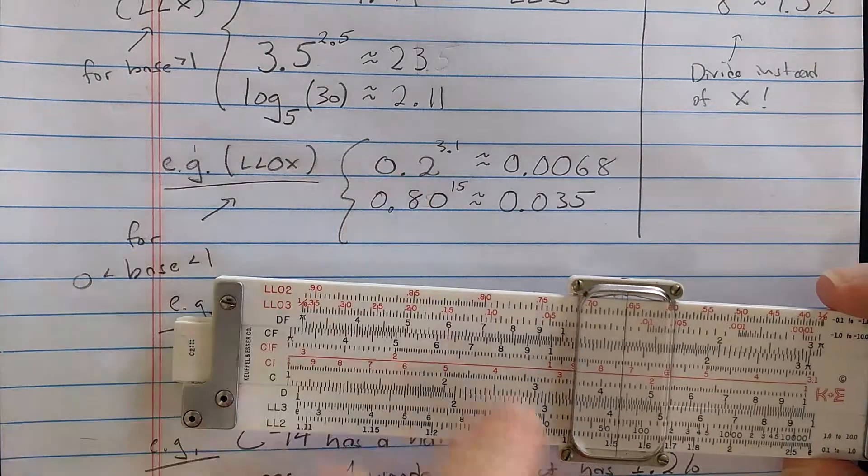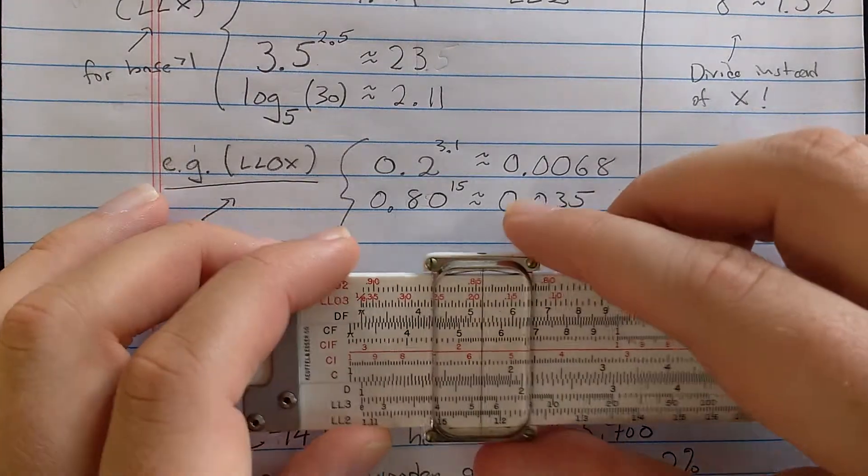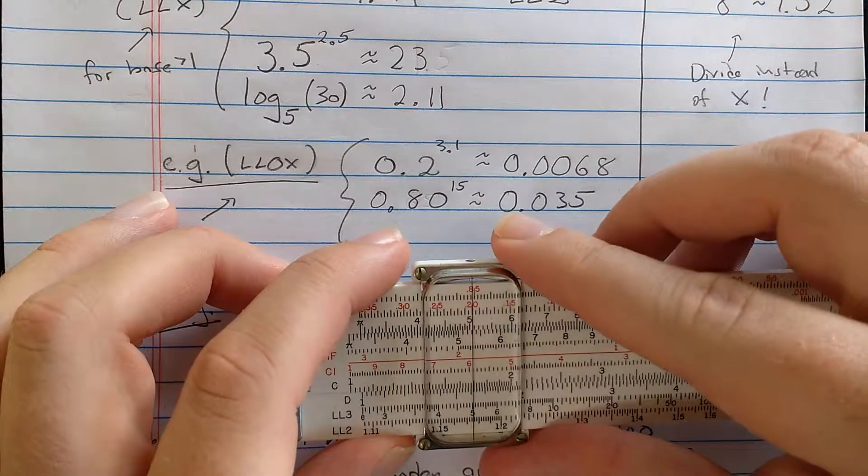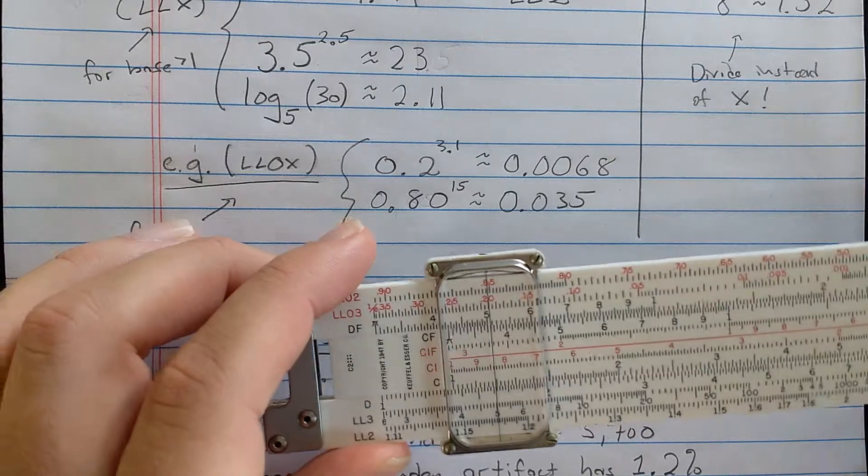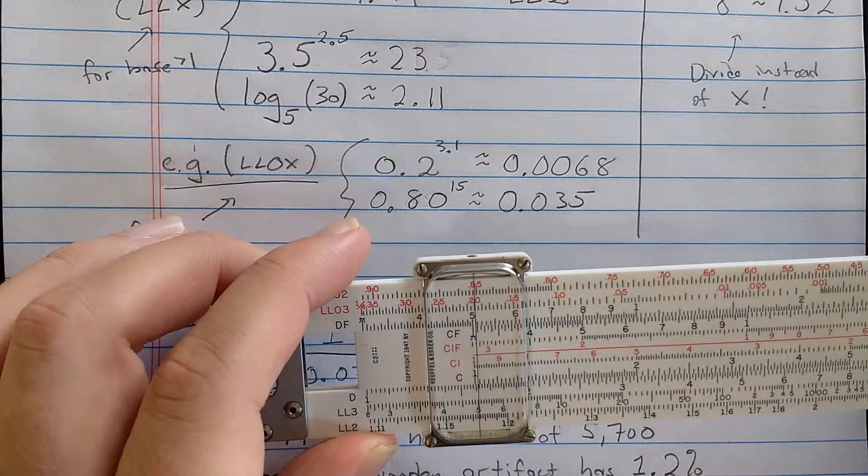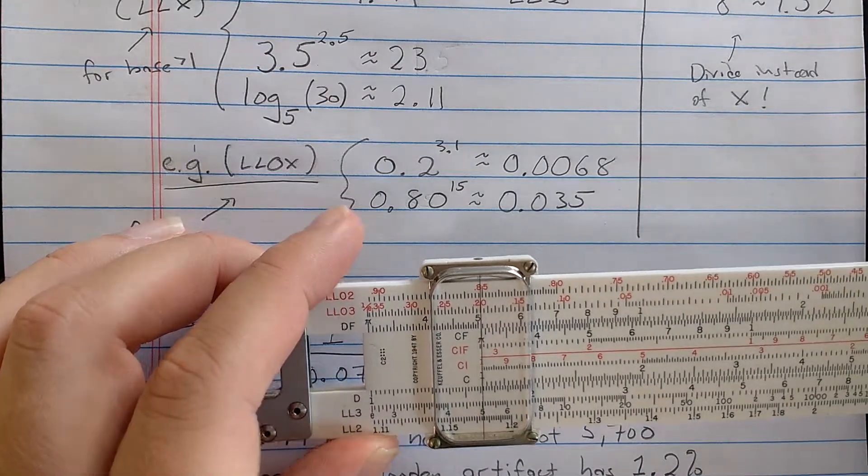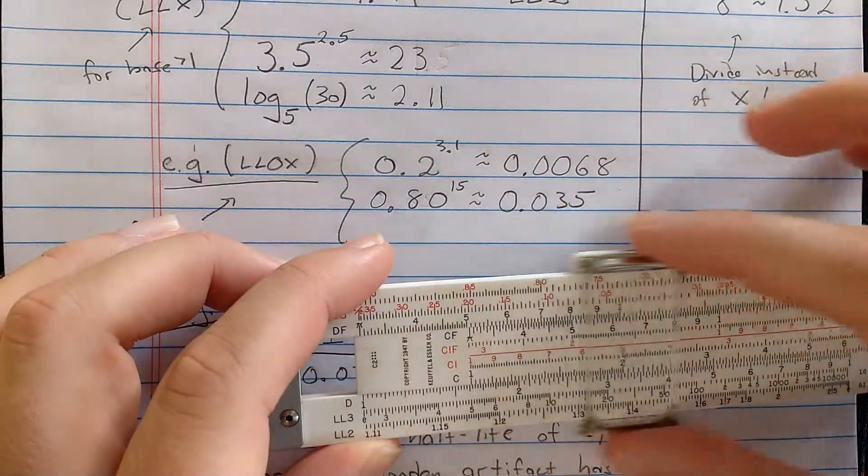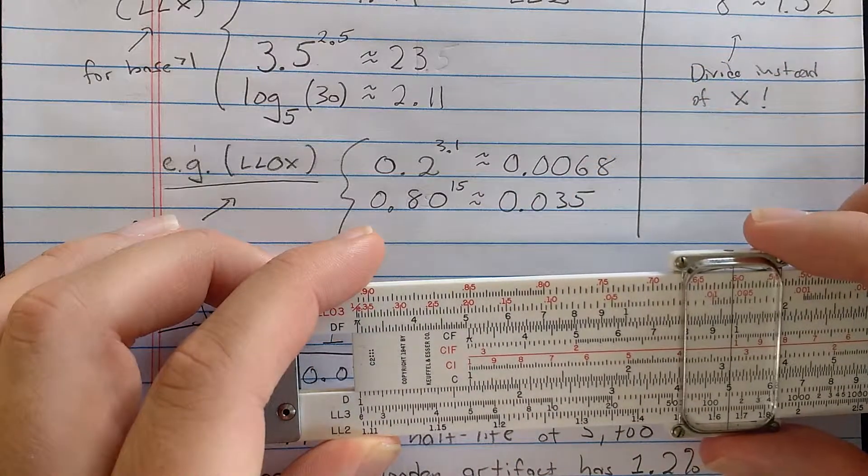So if I want to raise 0.2 to the 3.1, I find the 0.2. But I proceed in the same way. I align the left index of the C scale with the base. And then I go along the C scale to the exponent that I want.